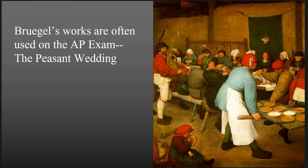Bruegel's works are often used on the AP exam. This is the Peasant Wedding. Once again we have more perspective being shown. We have some expressions on the faces of individuals, and we can see where it's more of a 3D vanishing point — probably somewhere along right here. We can see that the people sitting on this side are certainly on a larger scale than those sitting on the other side of the table, with the exception of the small child here.